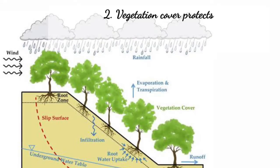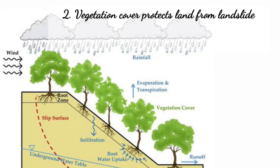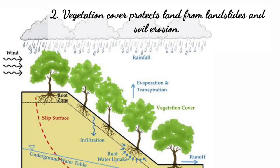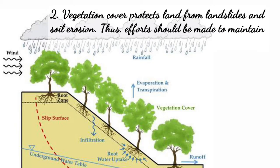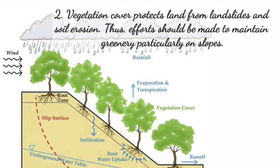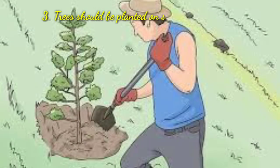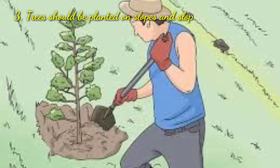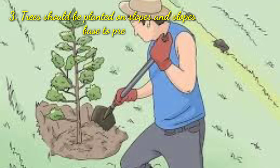Number 2: Vegetation cover protects land from landslides and soil erosion. Thus, efforts should be made to maintain greenery, particularly on slopes. Number 3: Trees should be planted on slopes and slope bases to prevent erosion.